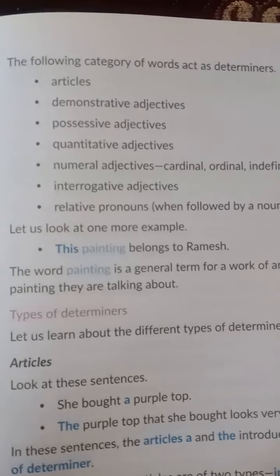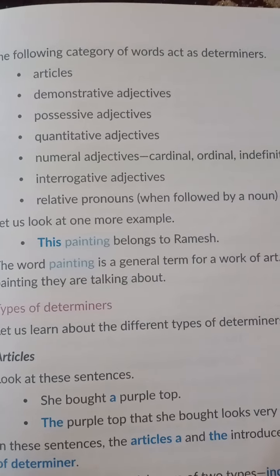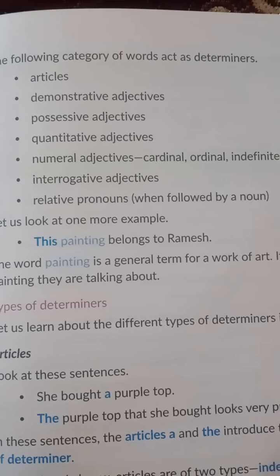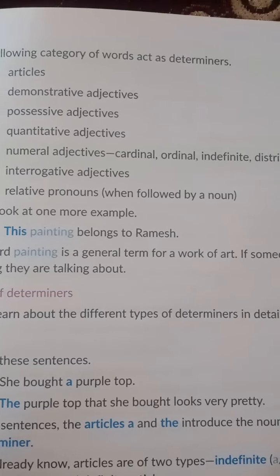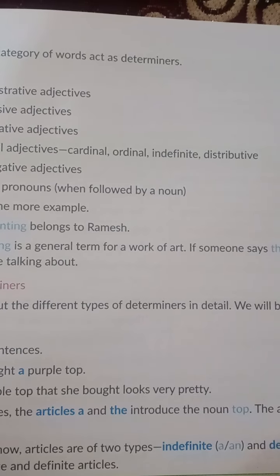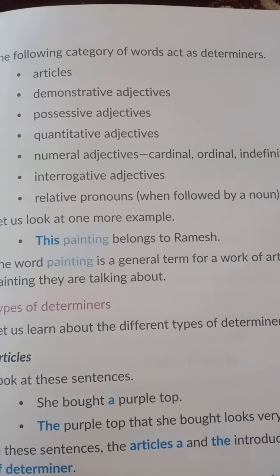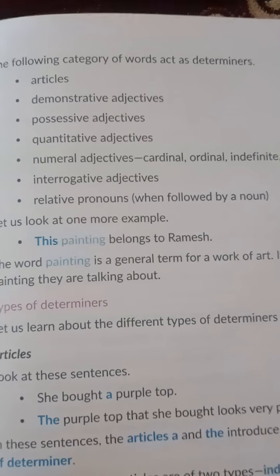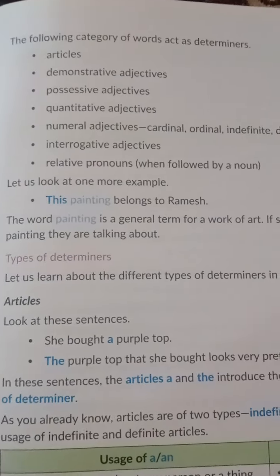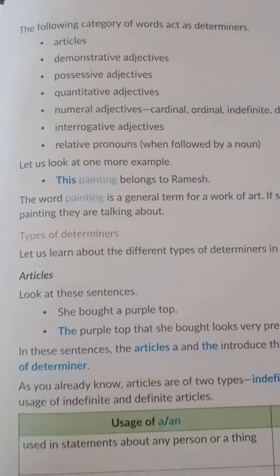The categories of determiners are: articles, demonstrative adjective, possessive adjective, quantitative adjective, numeral adjective (that is cardinal, ordinal), indefinite, distributive, interrogative adjective, and the last one is relative pronoun when followed by a noun. So these are the categories of determiners.